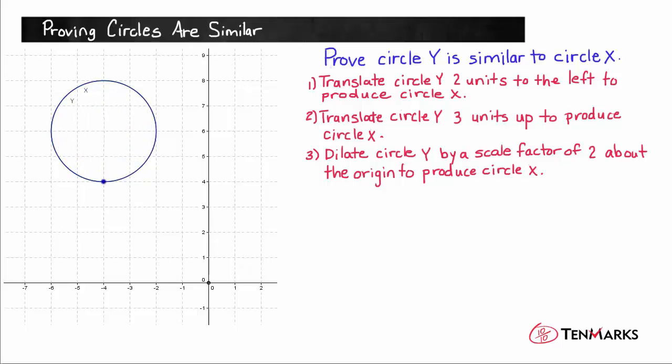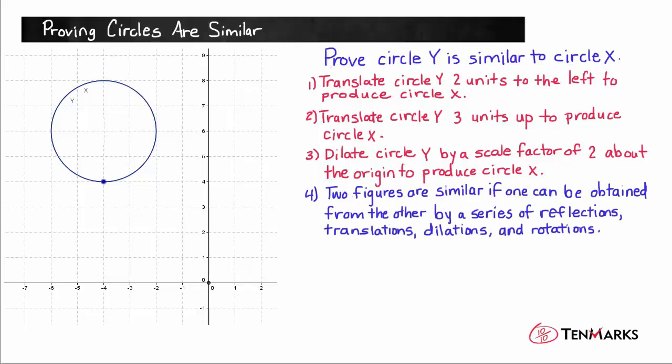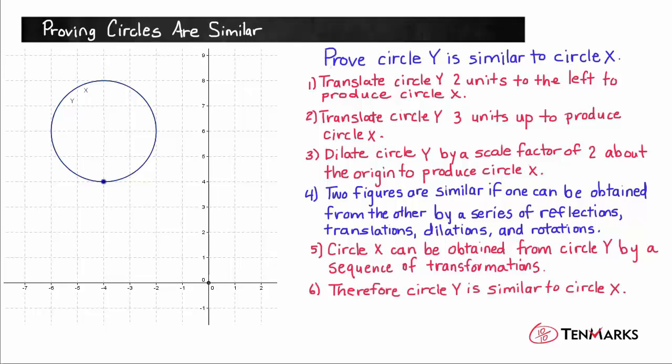And as we said, two figures are similar if one can be obtained from the other by a series of reflections, translations, dilations, and rotations, and we've shown that circle X can be obtained from circle Y by a sequence of transformations. Therefore, circle Y is similar to circle X. And now you know a bit more about how to prove that one circle is similar to another circle. See you next time!